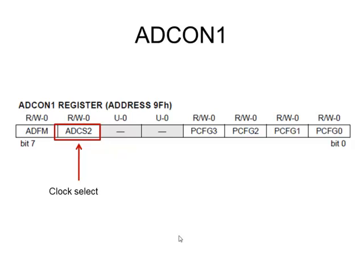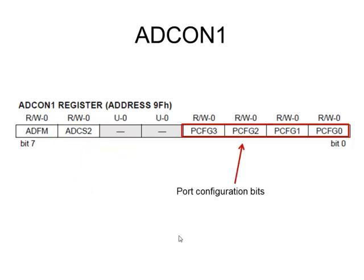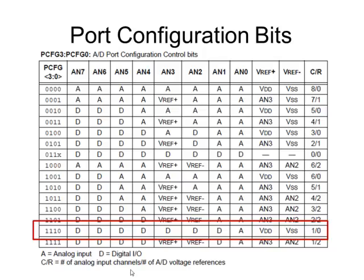This is one of the clock select bits, and these are the port configuration bits — four bits that define one of 16 different configurations for this port. Here are all the different combinations of these four bits and what they represent. The highlighted configuration is what we'll most likely use: only one analog input — analog input zero — with the remaining pins used as digital, and VDD and VSS as our reference voltages instead of providing separate external references.